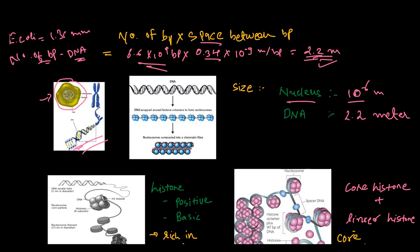The DNA is wrapped around a protein called histone protein. In prokaryotic organisms such as E. coli, they do not have a defined nucleus. The DNA is not scattered throughout the cell — the DNA is negatively charged, and it will be held with proteins.